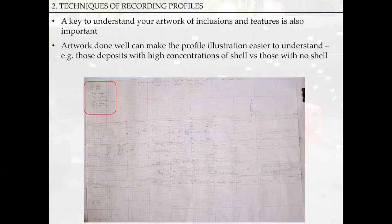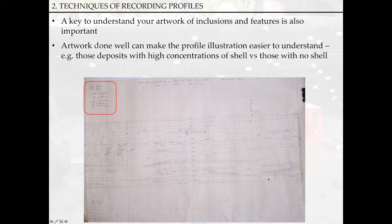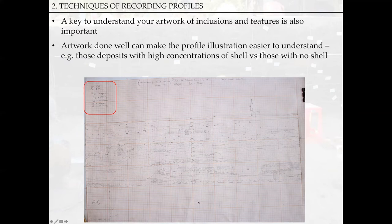This one says minus one meter from TBM — TBM means temporary benchmark, where we know the actual height above sea level for the temporary benchmark. When I come to do the archiving and drawing up, I may then add this as the actual above-sea-level level. A key is always handy for understanding your artwork and inclusions. In this illustration we've got numerous different types of inclusion marked on the profile — oyster shells as flat lines, pottery as dark lines, anodara shells as curvy lines, stones, and little lumps of burnt clay.